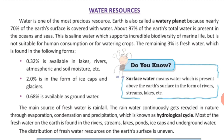Water is a very important resource. It covers three-fourths of the earth's surface — that is, 70% of the earth's surface is covered with water. That is why the earth is called the blue planet or the watery planet.